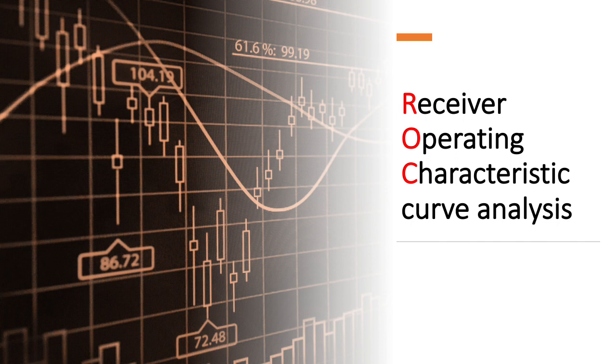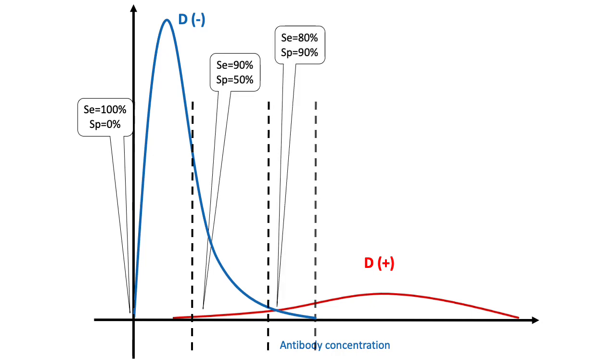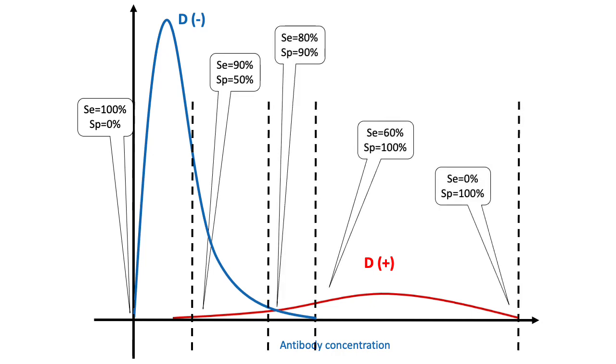Let's see how this works. In ROC analysis, you take a lot of different cut-offs and calculate for each of them the true positive fraction. This is the sensitivity of the test. And the true negative fraction, this is the specificity of the test.